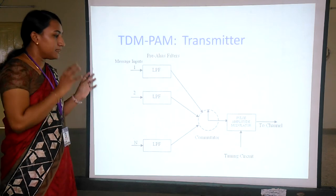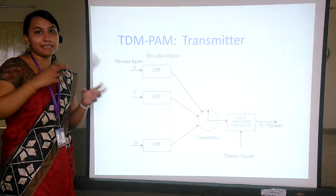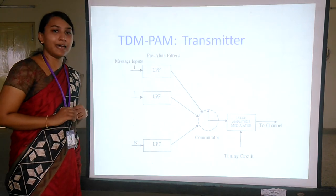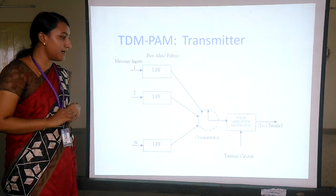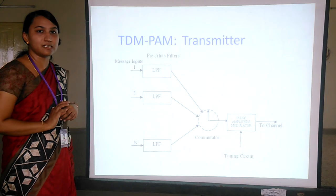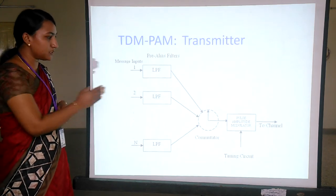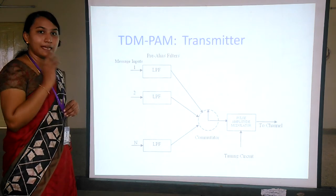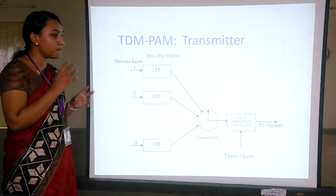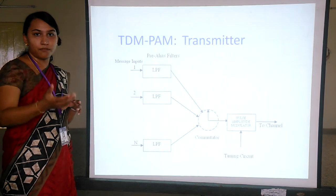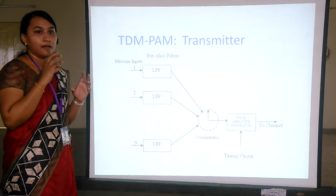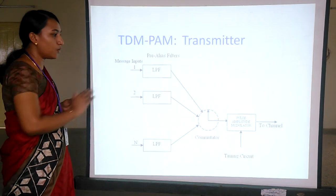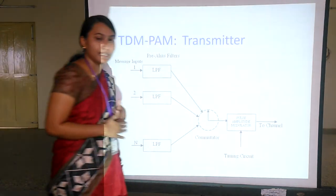The multiplexed signal is then passed into a pulse amplitude modulator. The pulse amplitude modulator is used to transform the multiplexed signal into a format suitable for transmission over the communication channel, after which it enters the communication channel.